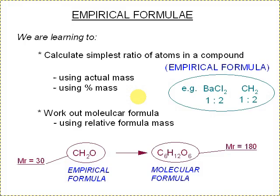Welcome to this tutorial, which is about empirical formula. We're learning to calculate the simplest ratio of atoms in a compound, and that is the empirical formula. For example, BaCl2, a 1 to 2 ratio, or CH2, a 1 to 2 ratio of the carbon to hydrogen there.